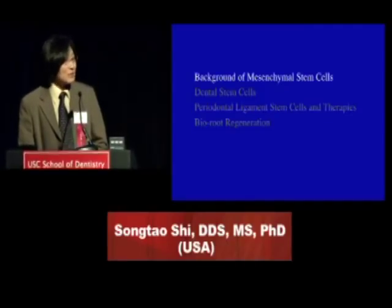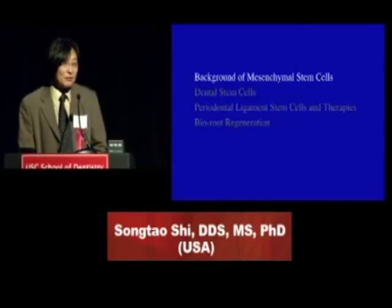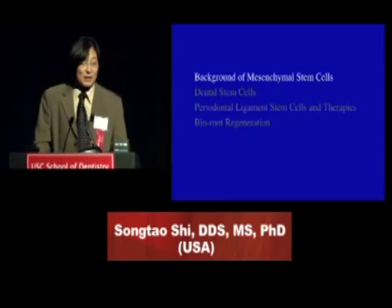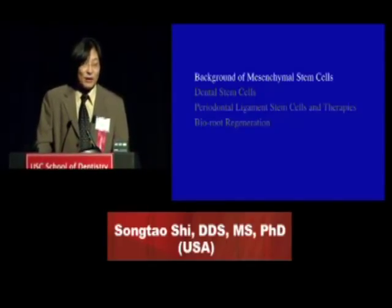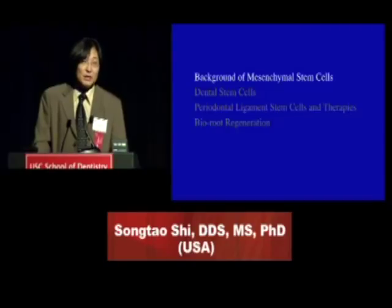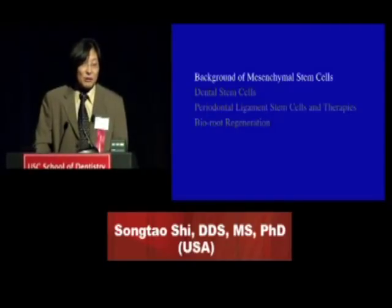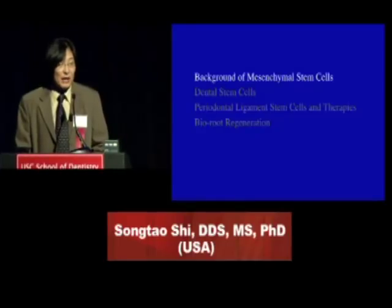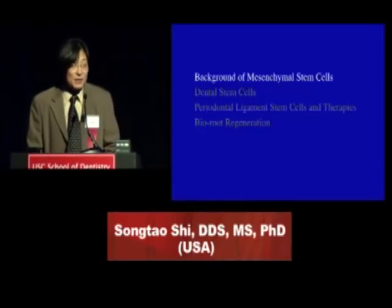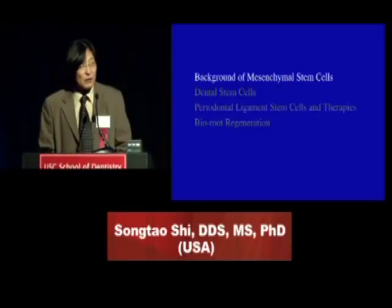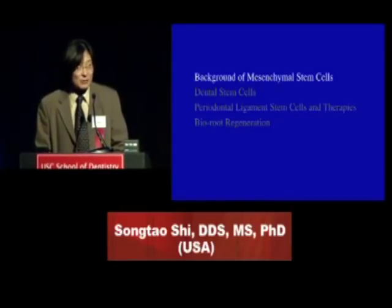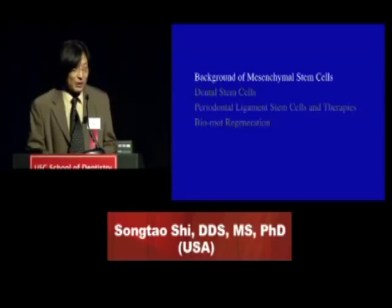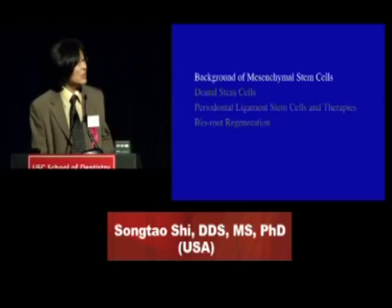Today I want to touch four areas, basically. First, I want to talk about the background of mesenchymal stem cells, which is the one we use more commonly in tissue regeneration. I also want to give you some background on the work we have been doing. We have identified dental-related stem cells, and I specifically want to talk about the periodontal ligament stem cells. And at the very last, I want to talk about how we are trying to do bio-root regeneration.